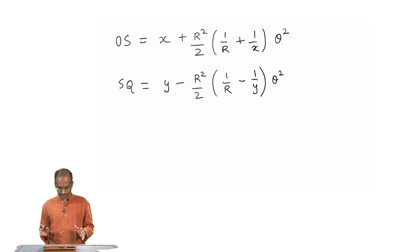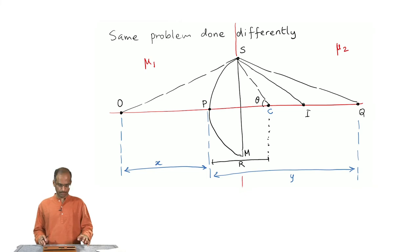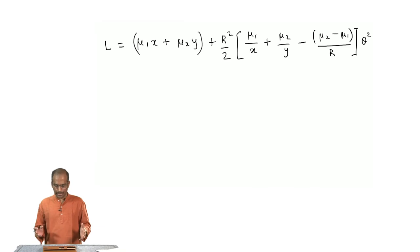I have OS and SQ, the total optical path length would be: the path length OS as you can see happens in a medium where the refractive index is mu 1 and the path length SQ takes place in a medium where refractive index is mu 2. I have collected all the terms together, added them, and this is my expression for optical path length L.